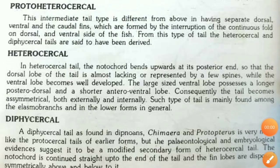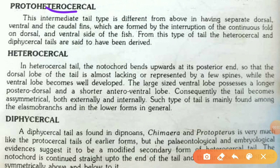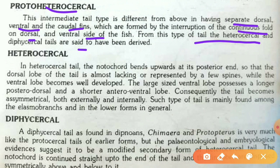The second tail type is the protohetercercal tail, which is an intermediate type. It differs from the protocercal by having separate dorsal, ventral, and caudal fins, formed by the interruption of the continuous fold on the dorsal and ventral sides. From this protohetercercal type, the heterocercal and diphycercal tails are said to have been derived.